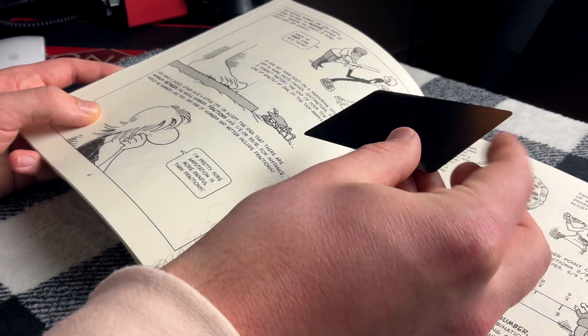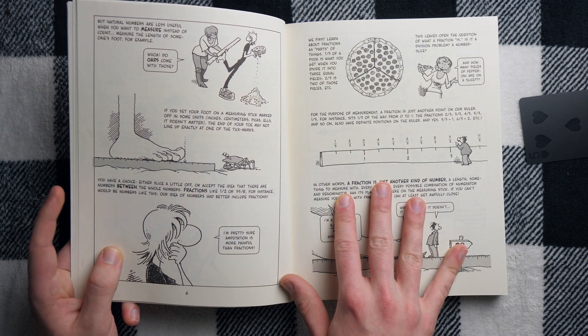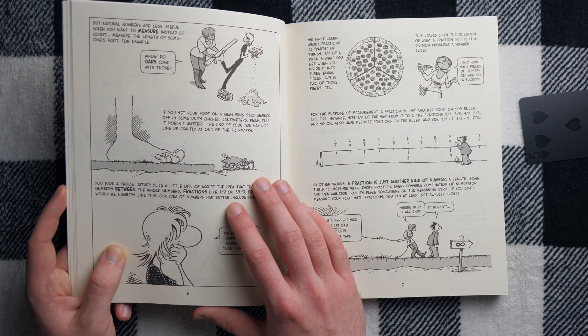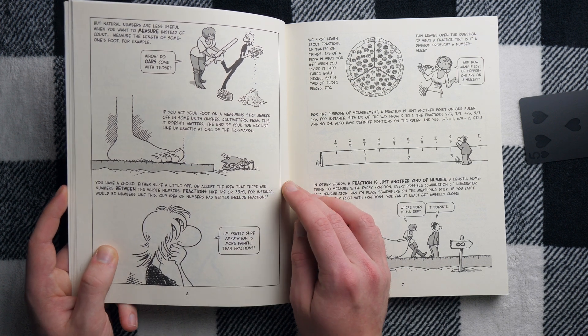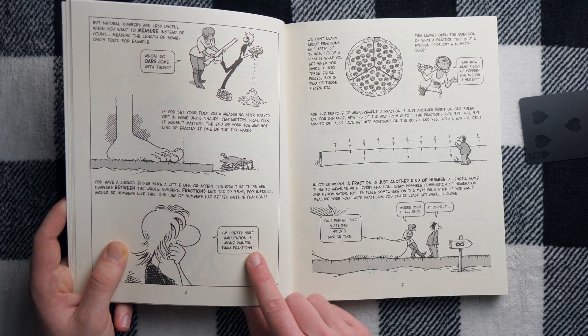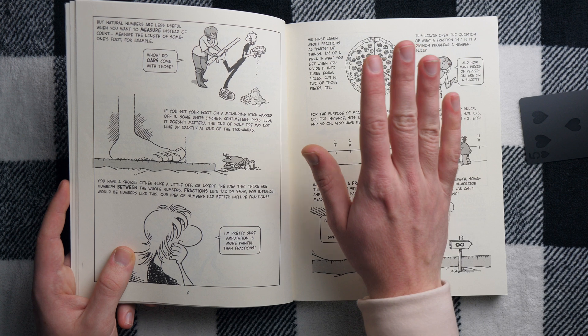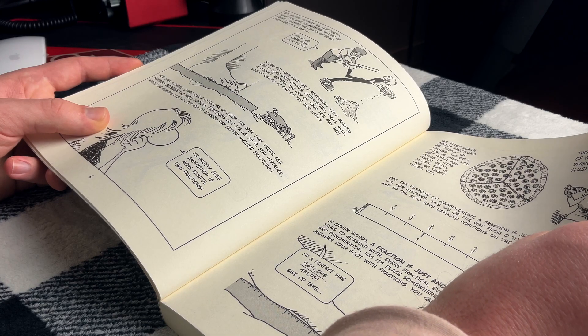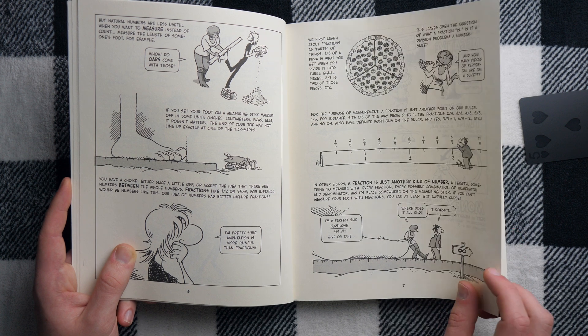I've used these cool black playing cards to mark some of the pages I want to take a closer look at. Like this one that introduces fractions, I think is great. I'm a big fraction fan as somebody who's all about exactness, not really into decimals, varying to fractions. And they talk about fractions here. If you're measuring a foot, look, it's probably not going to fall exactly on the tick mark of the ruler if you're trying to measure your foot. So you have a couple options, right? Either slice a little off or accept the idea that there are numbers between the whole numbers. And the fellow says, well, I'm pretty sure amputation is more painful than fractions. So I guess we're going to have to deal with the fractions. Well said. You got your classic pizza. I don't know what's on that pizza. I assume it's supposed to be pepperoni. Really just looks like not pepperoni though. It looks like circular, like cropped images of brick walls. Kind of funny.